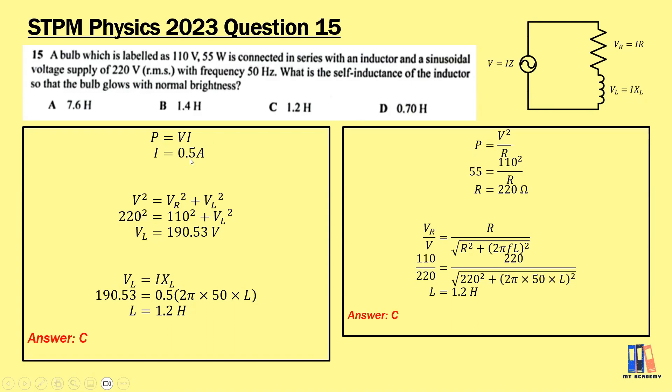The current is simple. We can apply P equals VI and we have the current is 0.5 ampere. For the voltage of the inductor, remember you need to use this formula. You cannot just directly minus the 220 volt with the 110 volt. You need to apply this formula to obtain the voltage across the inductor, which is 190.53 volt. Then you can apply the formula V equals IX with frequency 50 hertz. This is where we can get the self-inductance of the inductor equal to 1.2 Henry.